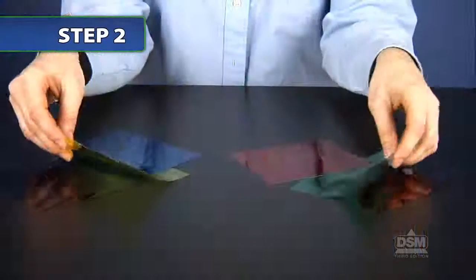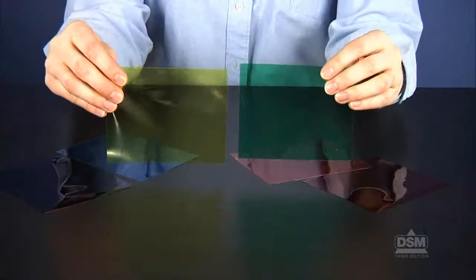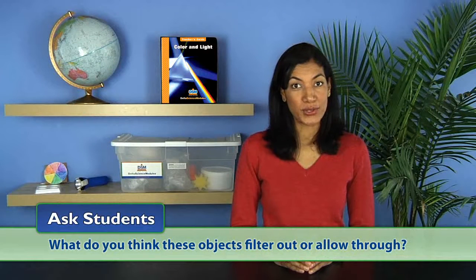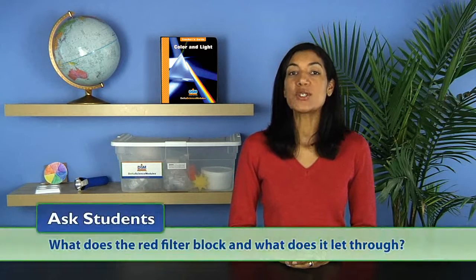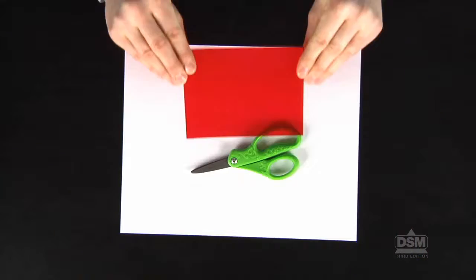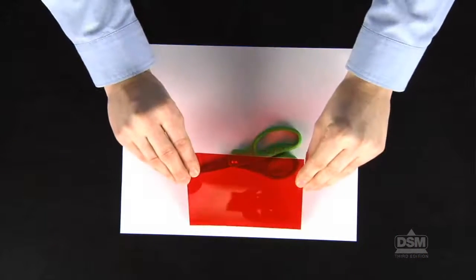Inform students that in this activity they will observe what happens when white light passes through color filters. Hold up several of the color filters and ask students what do you think these objects filter out or allow through. Students will probably guess that each filter blocks out certain colors of light and allows other colors to pass through. Then ask what does the red filter block and what does it let through? Students should know that it lets red light through but blocks or absorbs other colors of light.